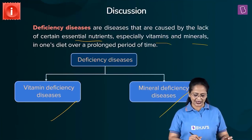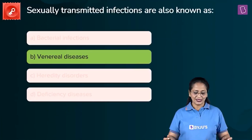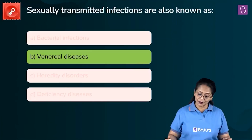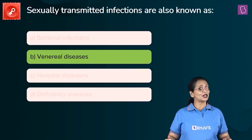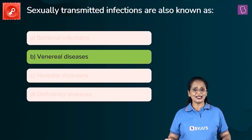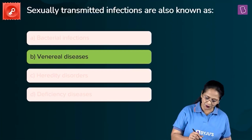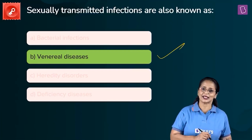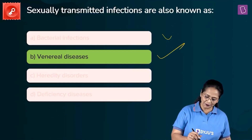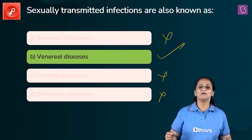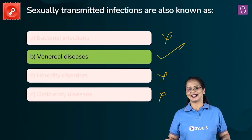Looking at the question again, sexually transmitted infections are also known as venereal diseases. So option B is correct; we eliminate A, C, and D. B is the right answer.